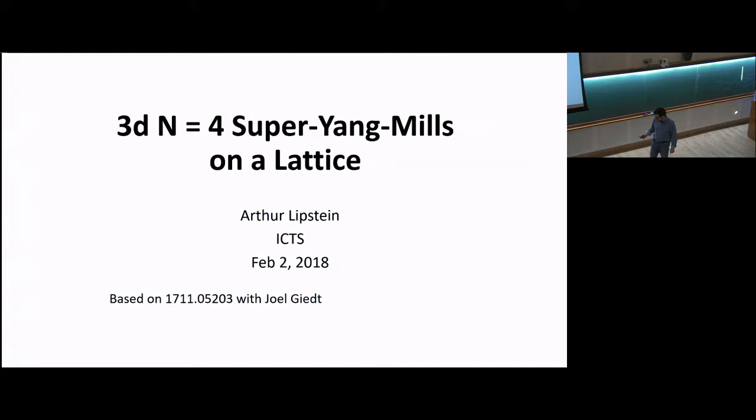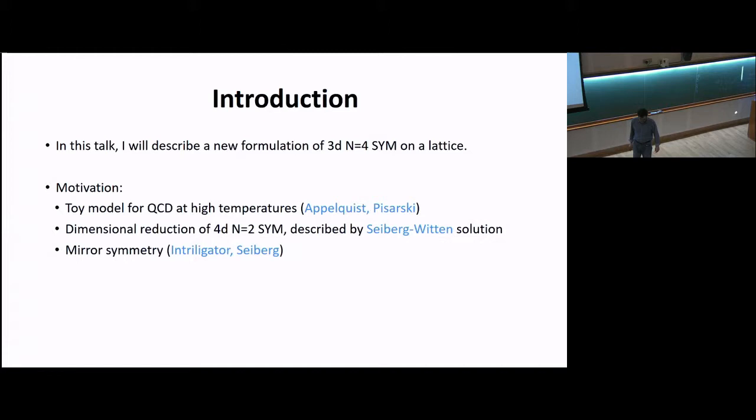Let me begin with some very basic motivation. It's interesting to consider three-dimensional gauge theories because, first of all, they're asymptotically free, but they're also super-renormalizable, and so one can think of them in some sense as a toy model for four-dimensional QCD. For example, it's well known that if you take Yang-Mills theory and couple it to adjoint scalars, it's a good approximation to four-dimensional QCD at high temperatures.